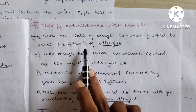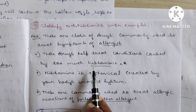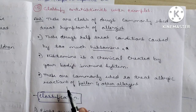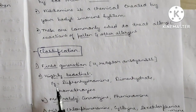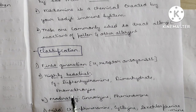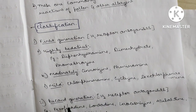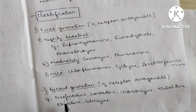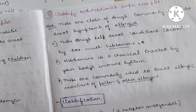Question 15: Classify anti-histamines with examples. Anti-histamines are drugs used to treat symptoms of allergies caused by too much histamine. Classification: First generation H1 receptor antagonists — highly sedative: diphenhydramine, dimenhydrinate, promethazine; moderately sedative: cinnarizine, pheniramine; mild: chlorpheniramine, cyclizine, dexchlorpheniramine. Second generation H2 receptor antagonists — fexofenadine, loratadine, levocetirizine, azelastine, ebastine, cetirizine.